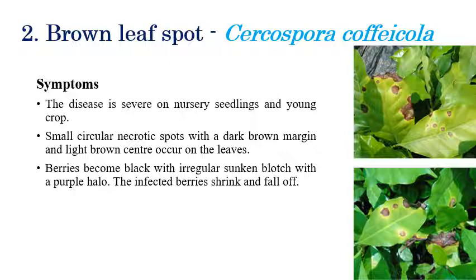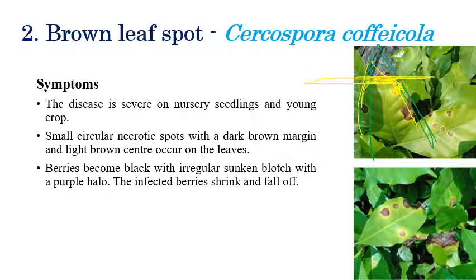The next disease is brown leaf spot, caused by Cercospora coffeicola. Looking at the symptoms on the leaf: initially small dark brown color spots can be seen. Later, these spots coalesce, and on the margins, cigar-burning like symptoms can be seen.